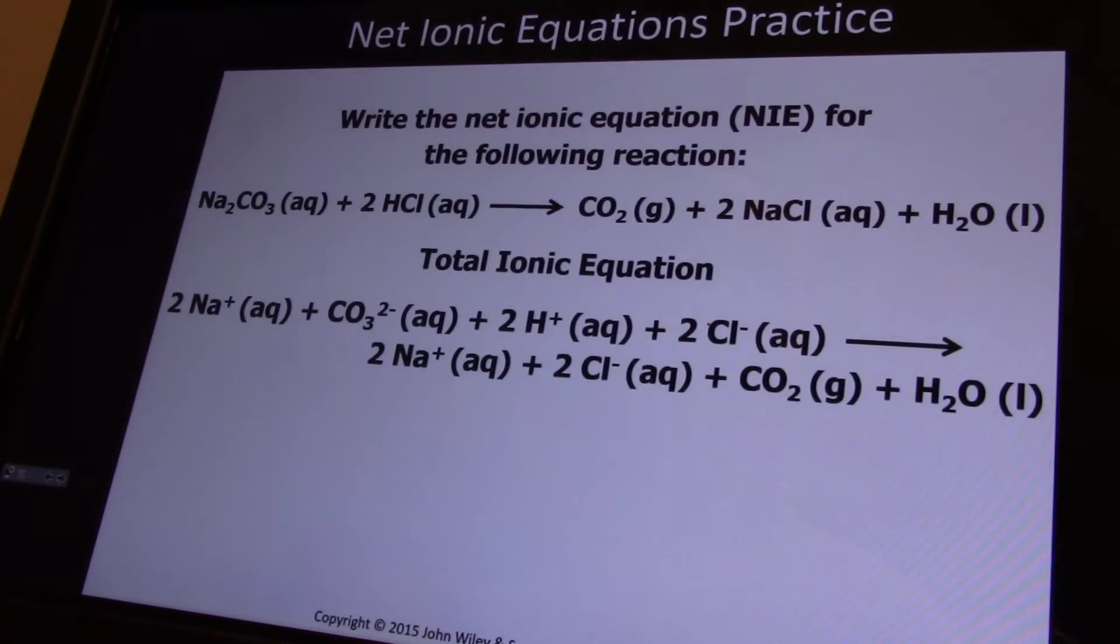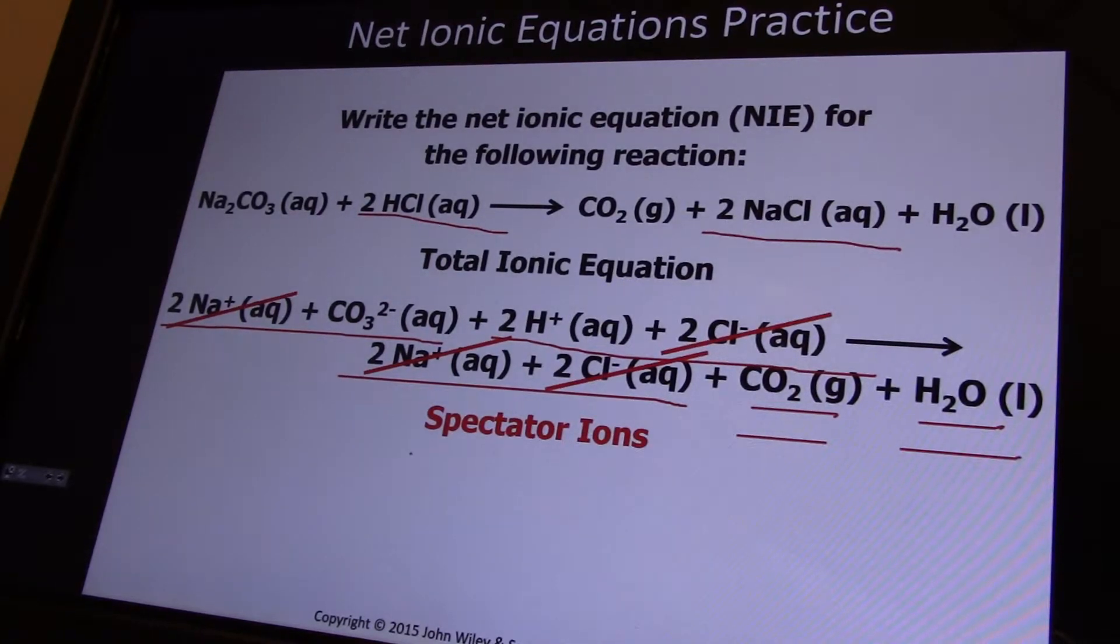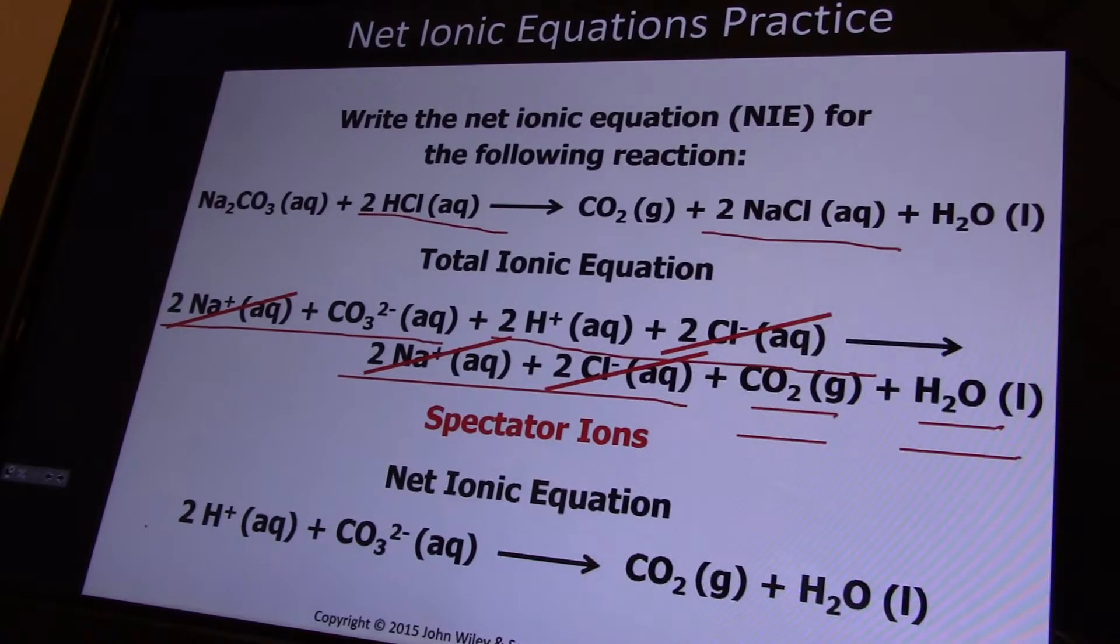First, break apart the aqueous species into their ions. Sodium carbonate is a soluble salt. Hydrochloric acid is a strong electrolyte that completely breaks down. Sodium chloride is a soluble salt. Gases and liquids keep their molecular form. Cross off the spectator ions - each side had two sodium pluses and two chloride minuses. This gives 2H⁺ plus CO₃²⁻ forms carbon dioxide and water. These combine to momentarily form carbonic acid, which is inherently unstable and breaks down into carbon dioxide and water.